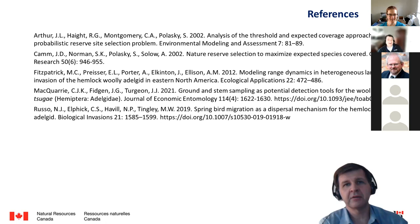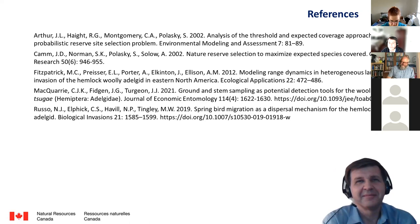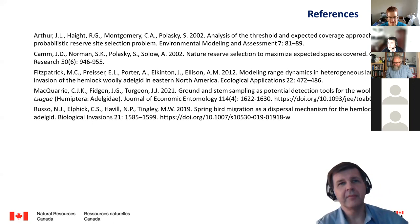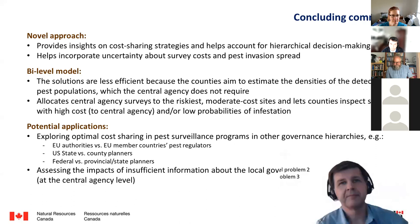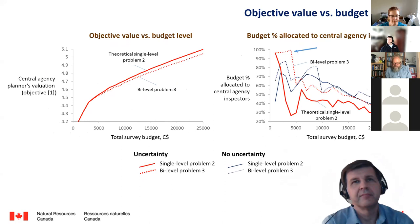Andrew has a question. Dennis, that's a wonderful presentation, thank you very much. It did my old statistician's heart good to see the treatment of uncertainty in optimization. I have two questions — I'll ask one and cede the floor and ask the other later. Could you go back to slide 12, please? The graph on the right-hand side — budget percentage allocated to central agency inspectors — is very jiggly. I'm struggling to understand intuitively why this bounces around so much. Do you have any insight as to that?